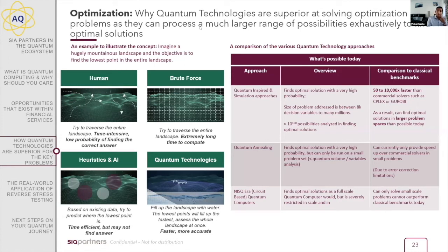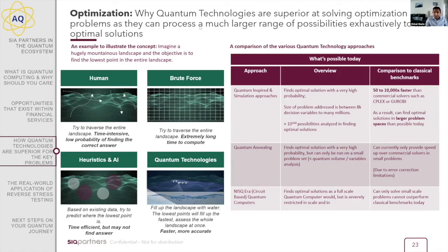A question was raised: the market of today depends on the market of the past — unlike the ideal case — so how do we deal with it? In quantum technologies, you don't need to train it with market scenarios from the past. It looks at each situation independently and finds the best answer in each situation. Quantum-inspired algorithms — developed by companies like Fujitsu, Microsoft, Hitachi, and Toshiba — are providing solutions to portfolio optimization and other areas where you can find the optimal solution.